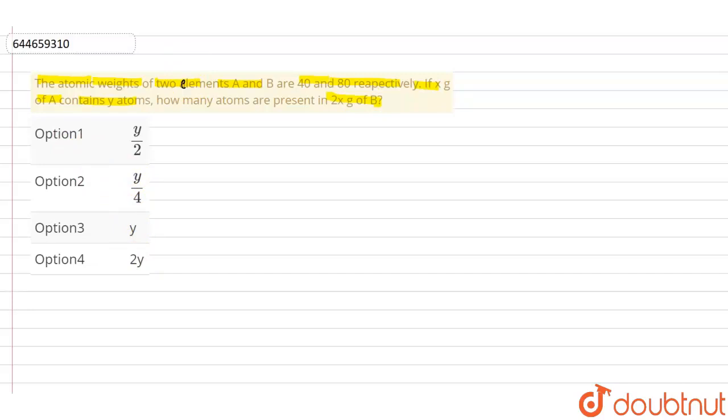So now, first you will find out the number of moles for both elements, that is A and B, and then you will find out the number of atoms by multiplying the moles with Avogadro's number. Then you will substitute y for the atoms of element A, then we will find the atoms of element B.